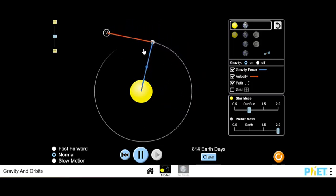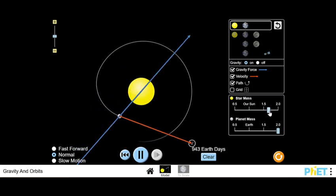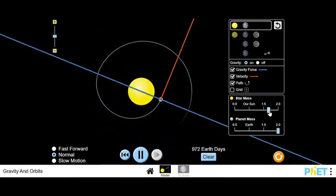So the orbit would get closer together. What would happen if I increased the Sun's mass? Those force arrows are so big. Looks catastrophic.